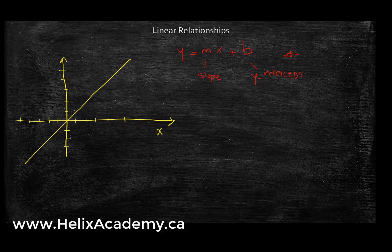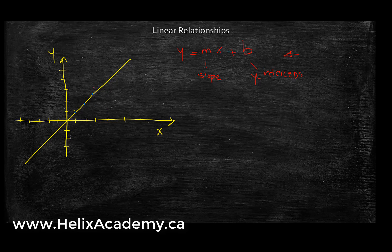Let's say this is your x-axis and this is your y-axis. This line goes through right in the middle and makes a 45-degree angle. A linear relationship is the relationship between all the points that lie on this line. If I look at these points here: this is 1 and 1, this is 2 and 2, this is 3 and 3, and this is 4 and 4. It looks like all of my x's are equal to all of my y's.